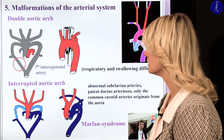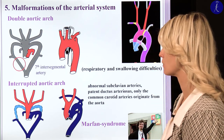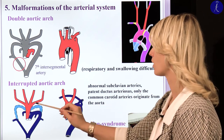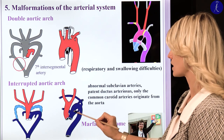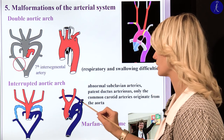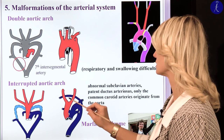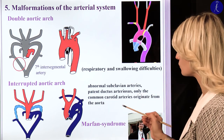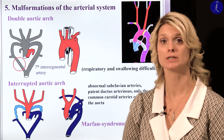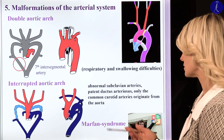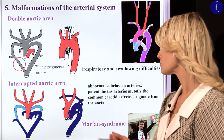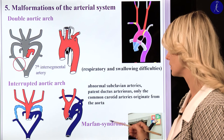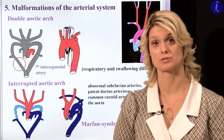Another malformation is the interrupted aortic arch, where there is an abnormal subclavian artery origin and a patent ductus arteriosus. Here you can see the connection between the pulmonary trunk and the aorta, but only the common carotid arteries originate from the aorta — this is a really severe developmental malformation. Also worth mentioning is Marfan syndrome, a genetic disorder of elastic fibers. Those patients unfortunately have a lot of problems with the heart and the vessels, so we can mention this syndrome also when talking about malformations of the arteries.